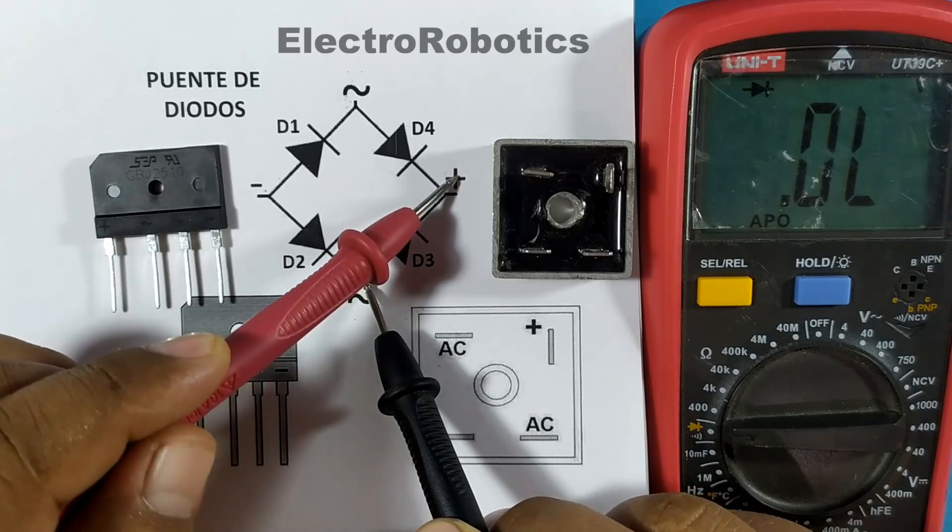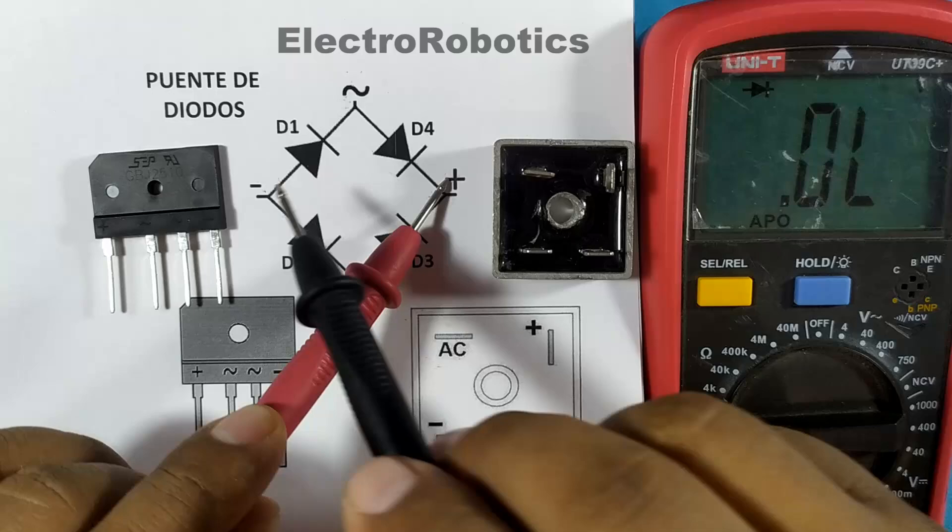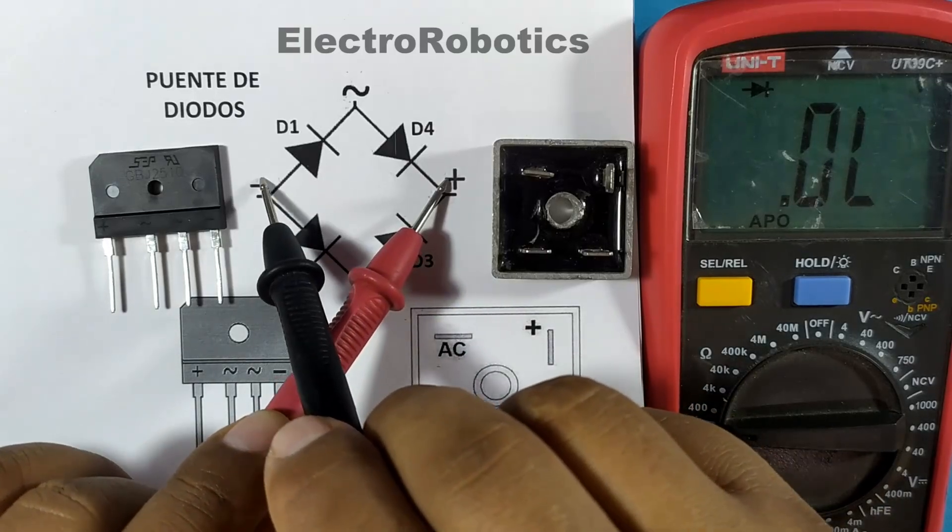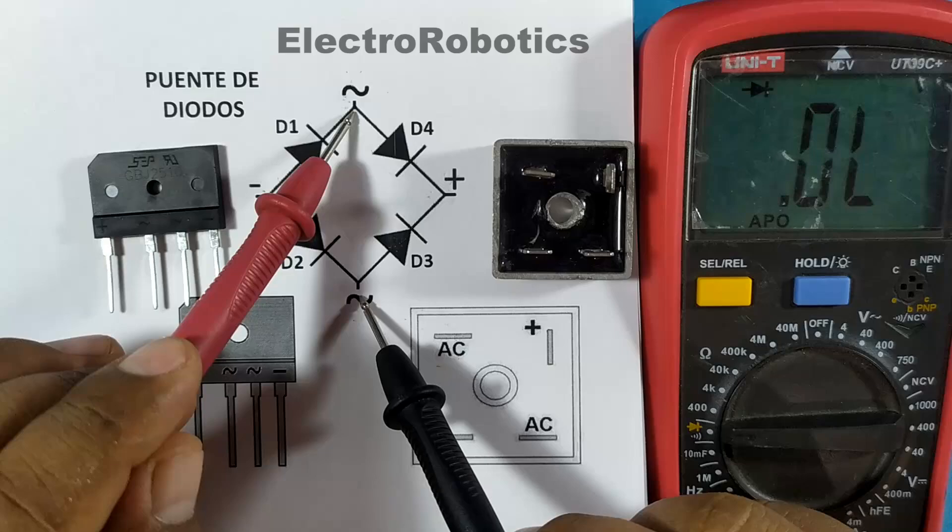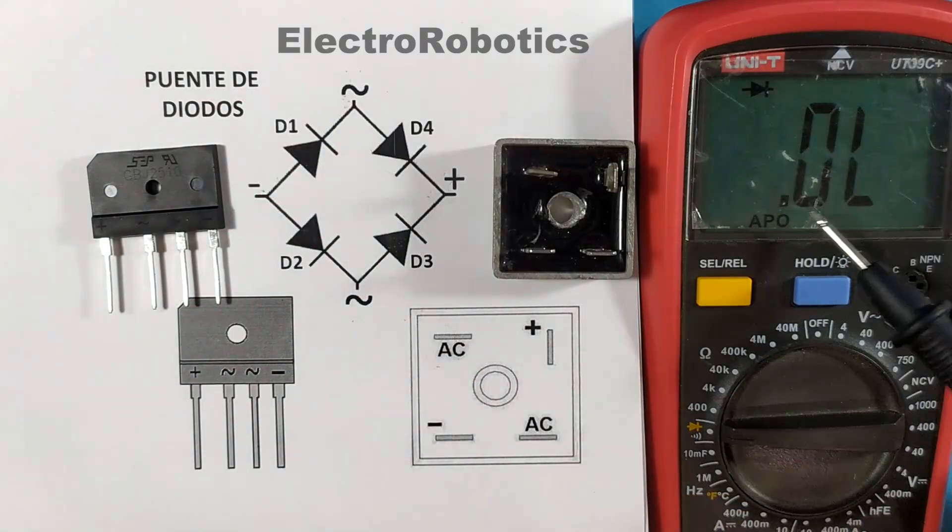However, this current will not be able to pass through D3. The same in this case here, the negative will not be able to pass through D1. Therefore, the multimeter will have a reading of a very high value.